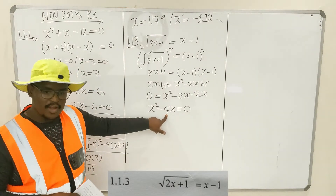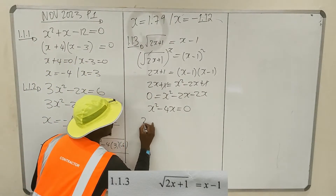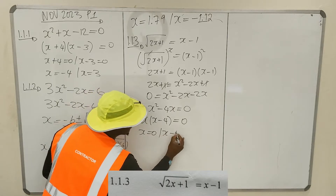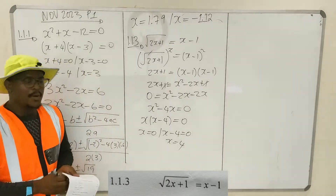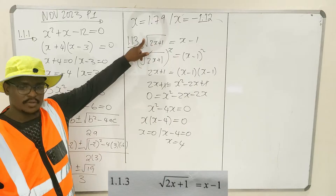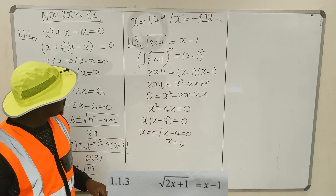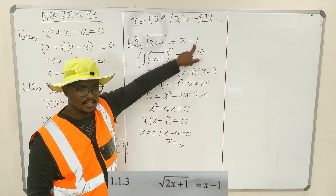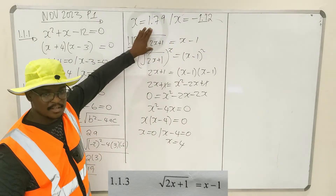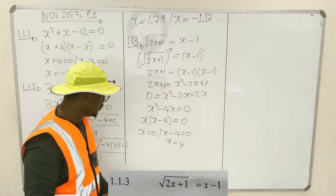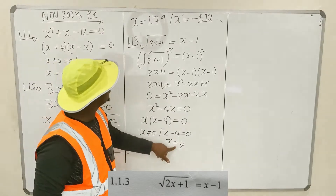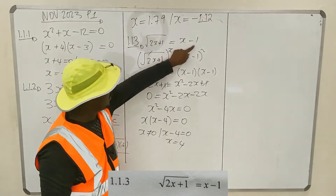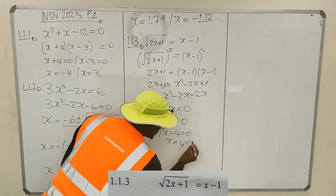Your a=1, b=-4, c=0. You can factorize: take x as a common factor, giving x(x-4)=0. So x=0 or x=4. But when working with square root equations, you must test your solutions. If x=0: the right-hand side is 0-1=-1, which is negative, but a square root can't equal a negative. So x=0 is rejected. For x=4: √(8+1)=√9=3, and 4-1=3. This confirms x=4 is the solution.